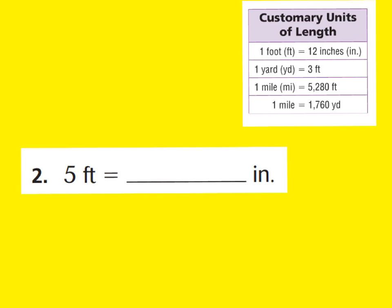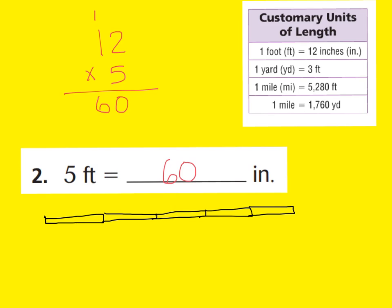We know that there's 12 inches in a foot. Think about a ruler — a ruler has 12 inches and it equals one foot. So if I have five rulers side by side, how many inches would that be? Our equation is going to be 12 times 5, which tells us how many inches are in five feet. Five times 12 equals 60, so we're going to have 60 inches in five feet. Each one of these boxes represents a ruler, which is one foot, 12 inches each, so 12 plus 12 plus 12 plus 12 plus 12 also equals 60.